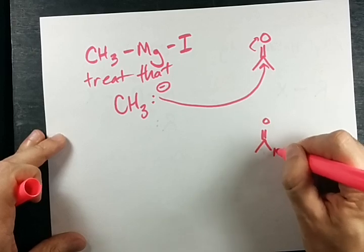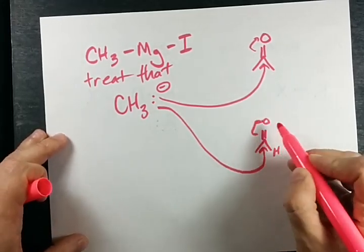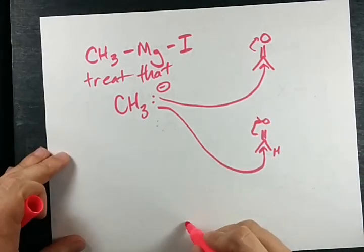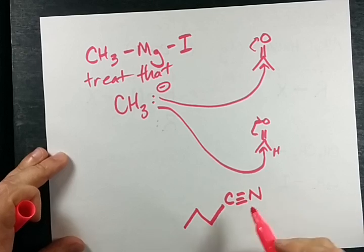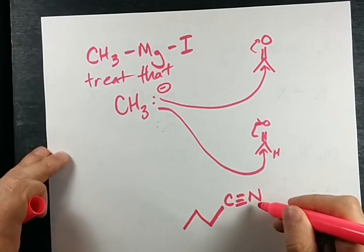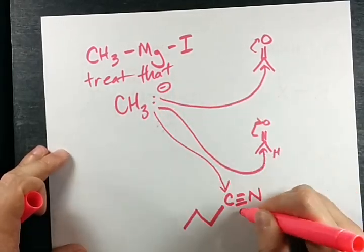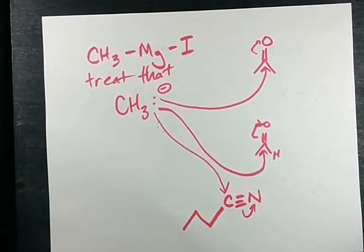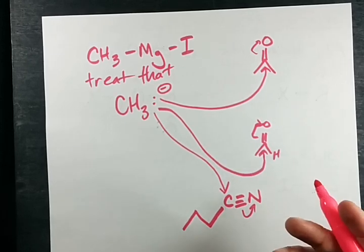Here's an aldehyde. That CH3 will attack that carbon right there. Here is a nitrile - it's a C triple bonded to an N. The N is more electronegative than the C. This lone pair of electrons will attack that C, pushing that to make what's called an imine, but you shouldn't care about that either.